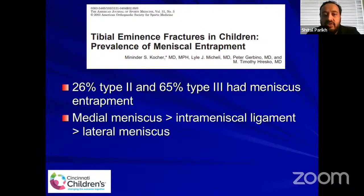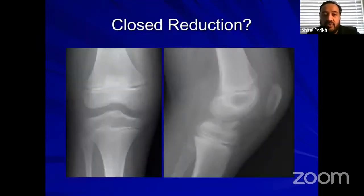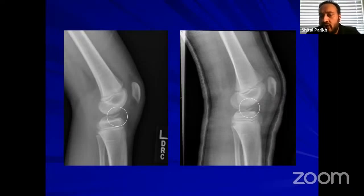When looking at meniscus entrapment, 26% of type 2 and more than half of type 3 patients had meniscus entrapment between the fracture fragment and the crater — medial meniscus more than the intrameniscal ligament, more than the lateral meniscus — and this is responsible for failure of conservative treatment. My experience with closed reduction is not very successful. This patient had an attempt at cast and reduction but I was not happy with post-reduction x-rays. My practice is not to attempt closed reduction and casting for displaced tibial spine fractures — only for undisplaced fractures would I use a cast.